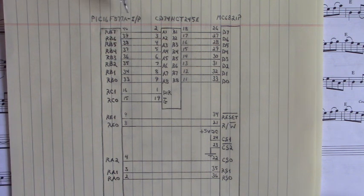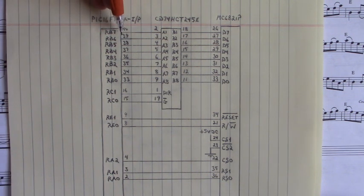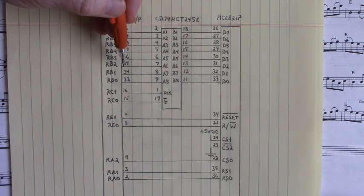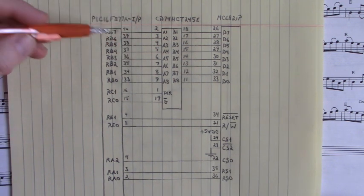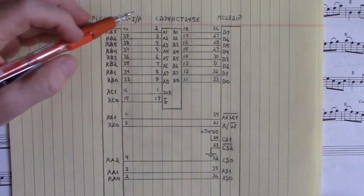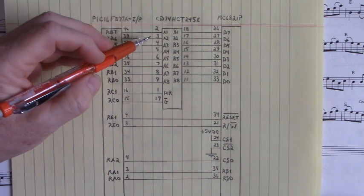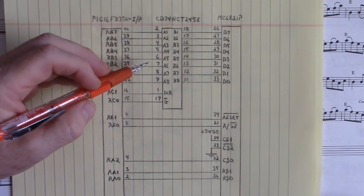So for the data bits, pins 40, 39, 38, 37, 36, 35, 34, 33 of port B, they're connected to pins 2, 3, 4, 5, 6, 7, 8, 9.